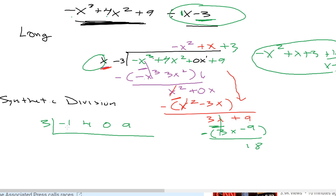Let's drop the first number down, negative 1. Multiply 3 times negative 1, we get negative 3. Add those 2, we get 1. Again, 3 times 1 is 3. Add those 2, we get 3. 3 times 3 is 9. Add those 2, we get 18.